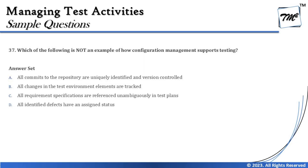The key word in the question is 'not' — they are looking for what is NOT configuration management. Option A says all commits to the repository are uniquely identified and version-controlled — that is very relevant to CM. Option B says all changes in the test environment elements are tracked — tracking changes is part of CM. Option C says all requirement specifications are referenced unambiguously in the test plan — referencing is traceability, so that's indirectly CM. Option D says all identified defects have an assigned status — assigned status is just a field value and does not relate to configuration management.